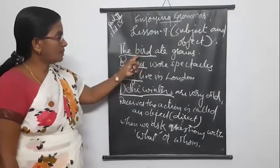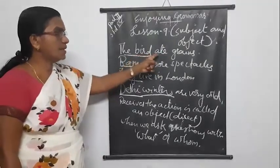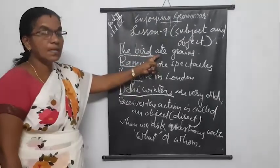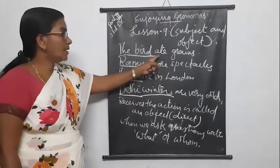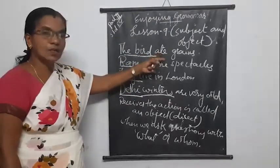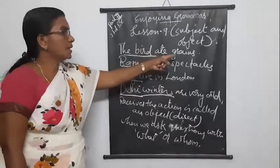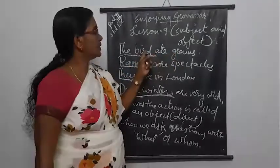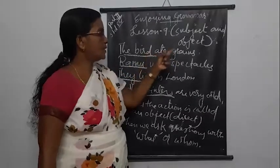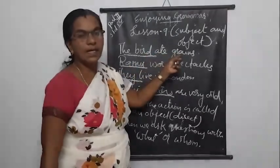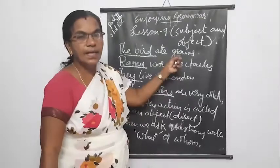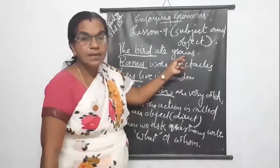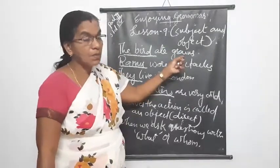These subjects are the doers of the action. The subject is the doer. Grains — the subject received grains. So this is the subject.